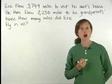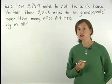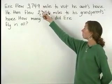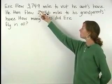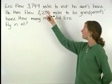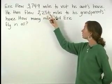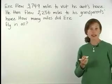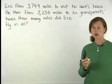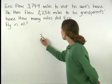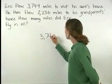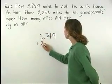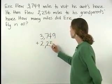Remember that 'in all' are key words that tell us to use addition. So since we know that Eric flew 3,749 miles and 2,256 miles, we want to add these two numbers. So we have 3,749 plus 2,256.